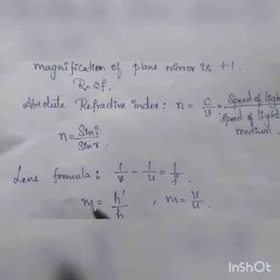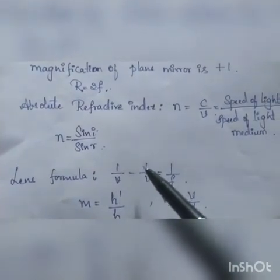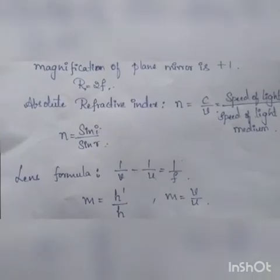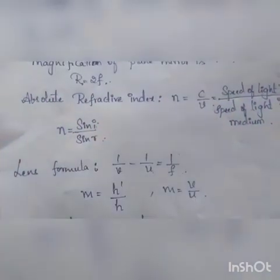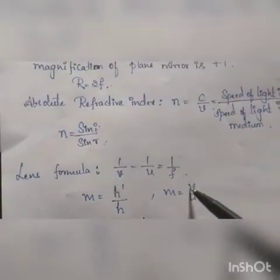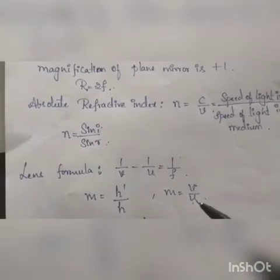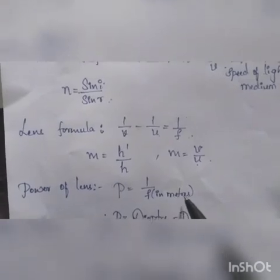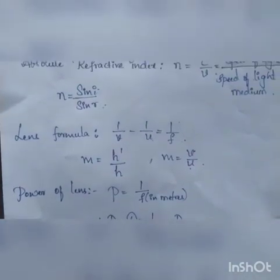The lens formula is 1/v − 1/u = 1/f — the only change from the mirror formula is the negative sign. Magnification is m = h'/h and also m = v/u. The power of a lens is P = 1/f, where f must be in meters, and the unit of power is diopter, denoted by capital D.